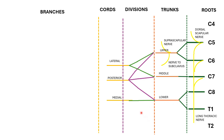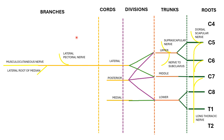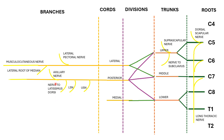Now let's see the branches from the cords. First, the lateral cord gives three branches: the lateral pectoral nerve, the musculocutaneous nerve, and the lateral root of the median nerve. To remember these three branches, use the mnemonic 'Let Me Laugh.' From the posterior cord, we have five branches: upper subscapular, lower subscapular nerve, nerve to latissimus dorsi, the axillary nerve and the radial nerve. To remember this, use the mnemonic 'ULNAR.'